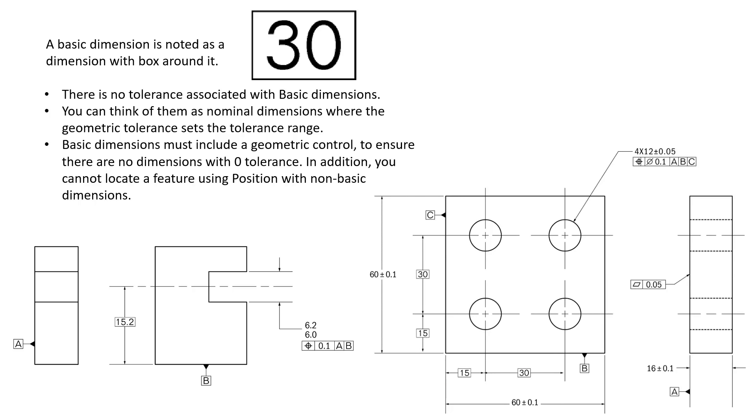As shown here, a basic dimension is noted as a dimension with the box around it. For some of you this may be the first time you've ever seen basic dimensions, but if you look at this value up here in the box we've got 30, that would be 30 millimeters I would assume, but that could be 30 inches. This value here inside of a box, they would both mean the same thing.